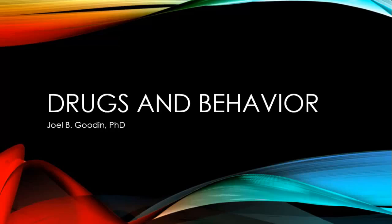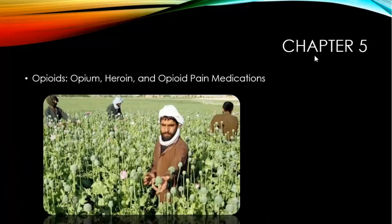Welcome back to Drugs and Behavior with Dr. Gooden. This is chapter 5: Opioids — Opium, Heroin, and Opioid Pain Medications. Our society has a love-hate relationship with opium and a category of similar-acting drugs that are collectively known as opioids.